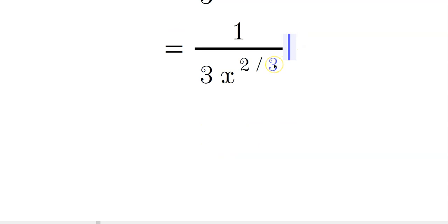Lastly, this 2/3 right here becomes the index of a root. It's a cube root, in other words, of x squared. That's how you verbalize that, so you're going to have 1 over 3 and then a cube root of x squared.